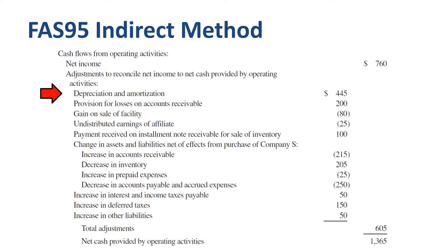The next four items work in a similar way. You make adjustments for items that are treated differently when you recognize profit or costs, versus when you record cash receipts or cash disbursements of a company. A key section of the indirect method is increases or decreases of working capital items on the balance sheet. If accounts receivable goes up, then cash goes down — in this case 215 million. If inventory decreases, then cash goes up — in this case 205 million.